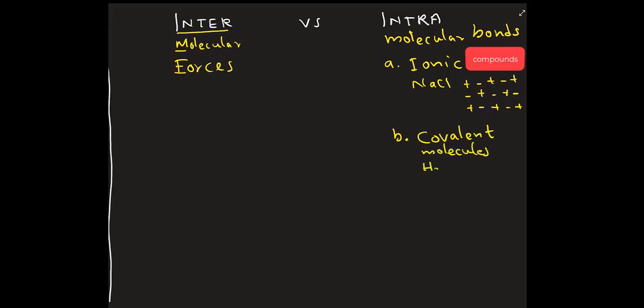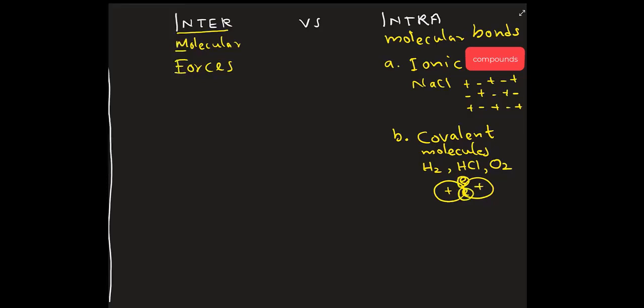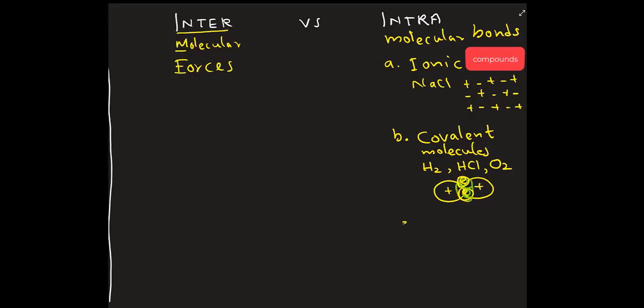And then look at the second one, B, covalent molecules - hydrogen, HCl, and so on. And these ones actually share electrons and the two nucleus in each side and the two electrons in the middle make a bond, covalent.